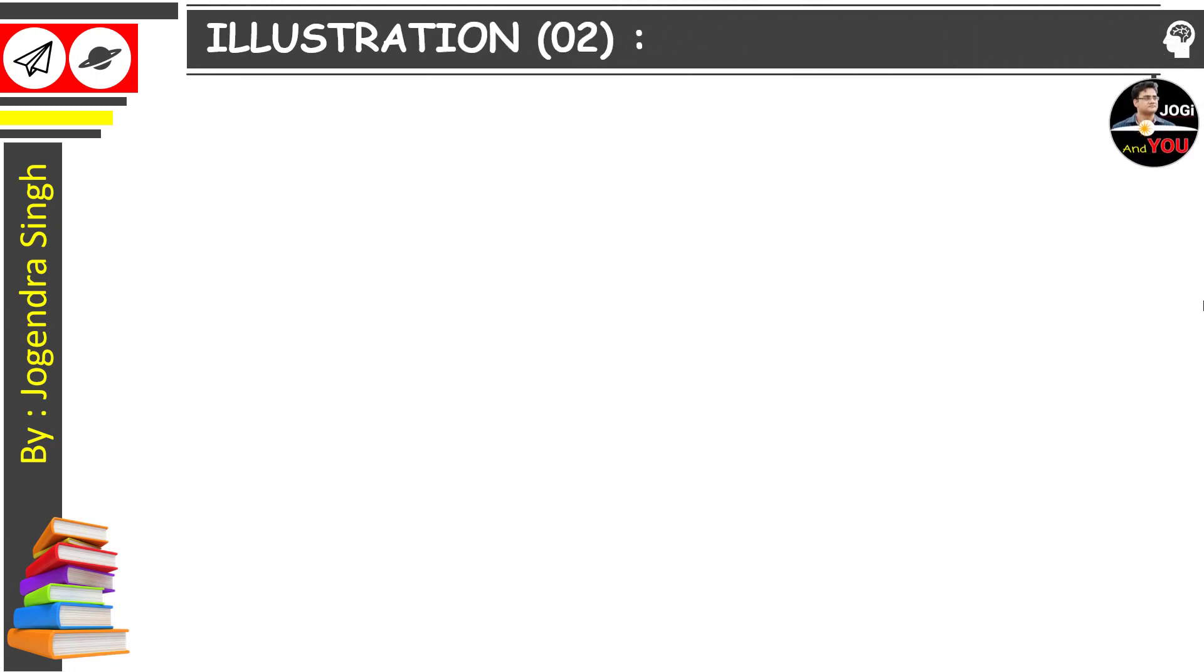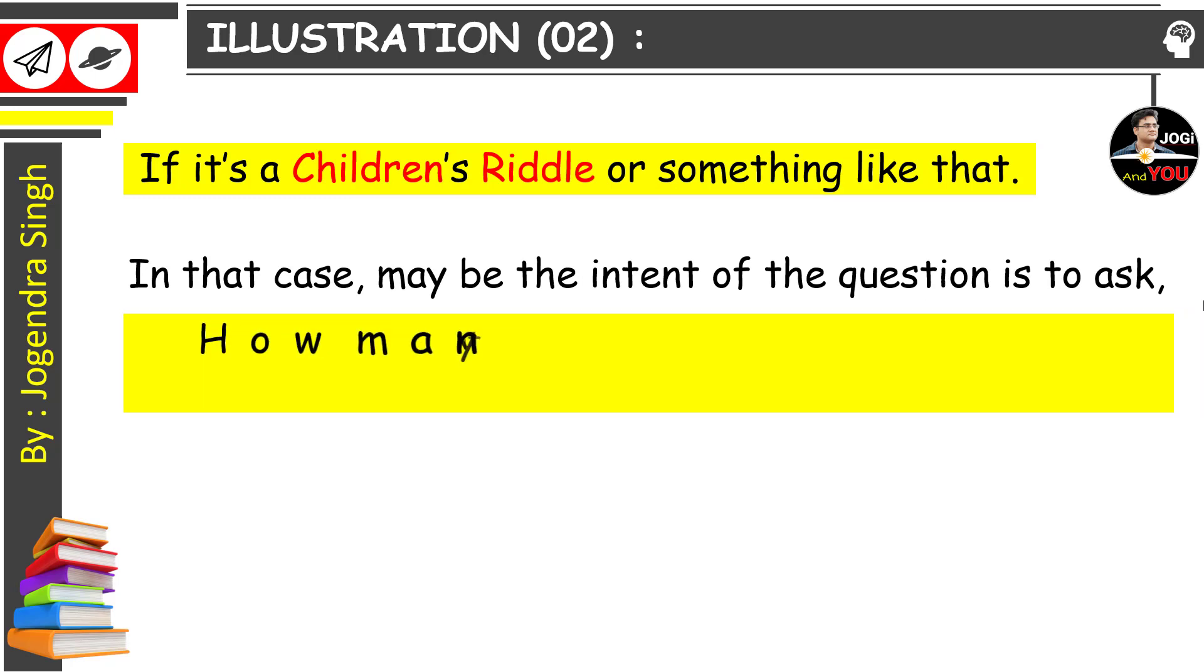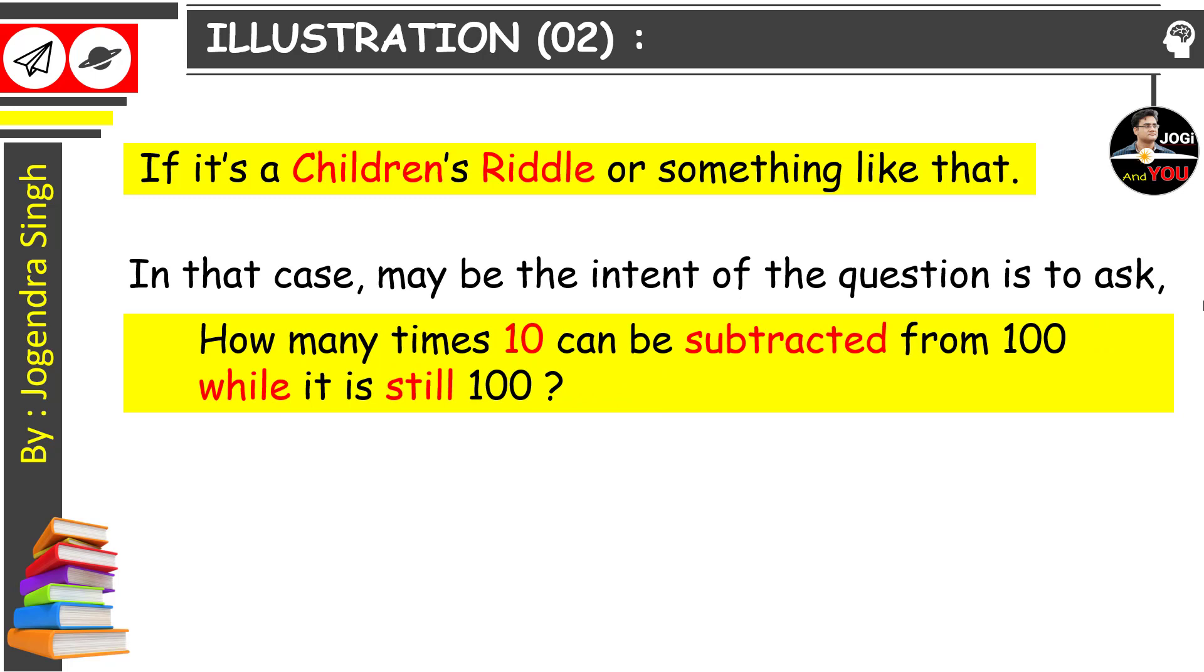So our actual illustration starts with number 2. If it is a children's riddle or something like that, maybe the intent of the question is to ask how many times 10 can be subtracted from 100 while it is still 100. Well, then in this case it would be only one time. See how.